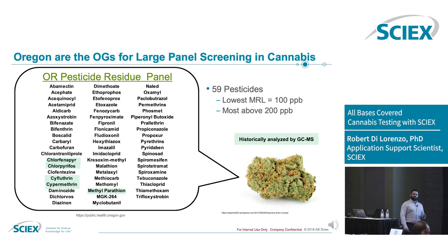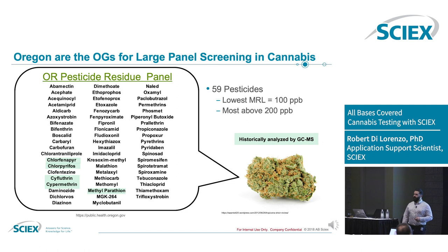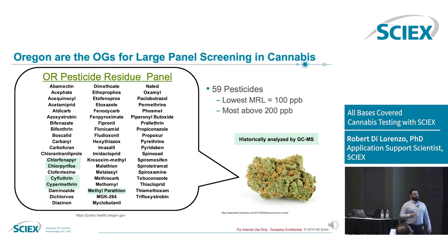Oregon was the first to come online in terms of creating a comprehensive testing portfolio for pesticides. Although Colorado was the first to come online in terms of legalization in the US, the rules around pesticide testing weren't very stringent and Oregon kind of set the standard. They dictated 59 pesticides down to about 100 parts per billion in the flower that need to be tested for in order for this product to pass.